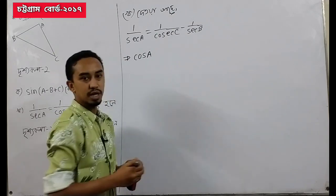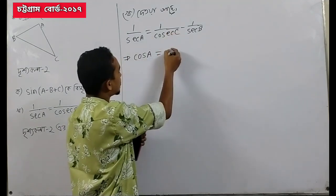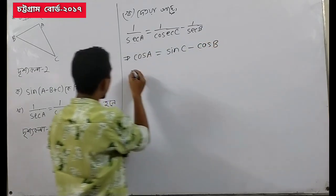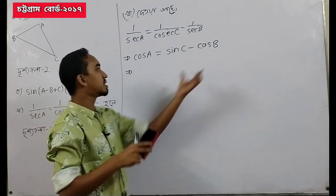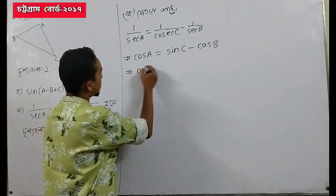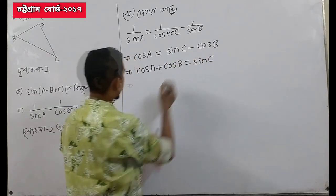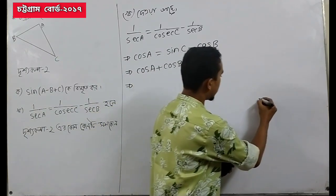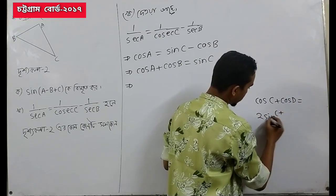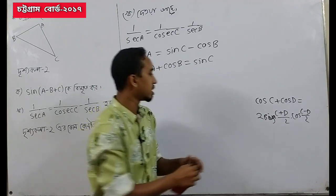You know cos equals 1 by C, 1 divided by C minus sine B is cos. So we have 2 cos(c plus d) divided by 2 into cos(c minus d) divided by 2.